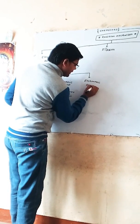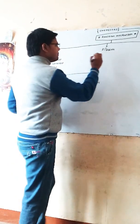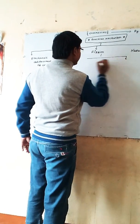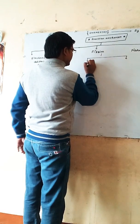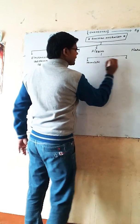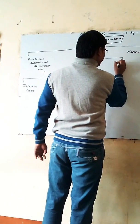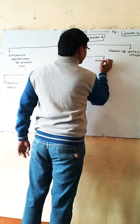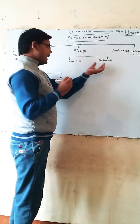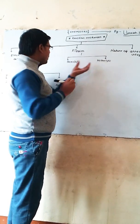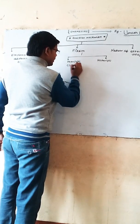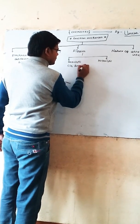Fissures are also of two types: homolytic fissure and heterolytic fissure. Homolytic examples include Cl2, Br2, I2, etc. Homo means same, hetero means different.